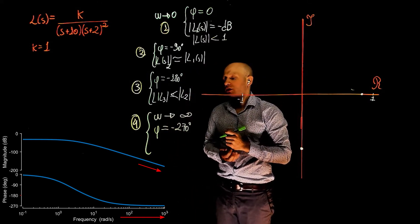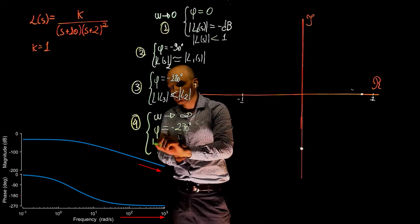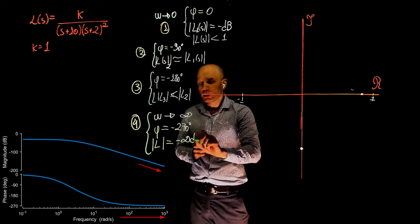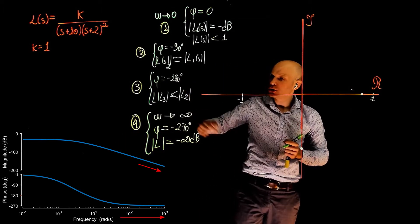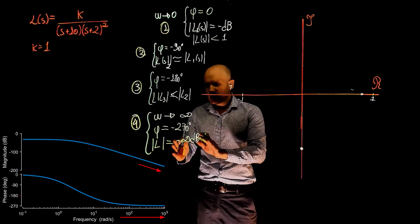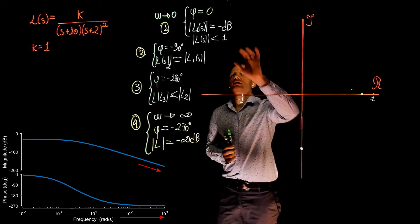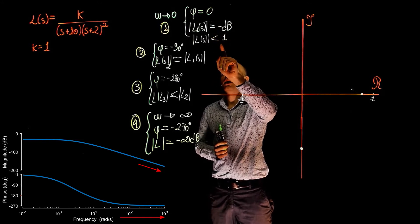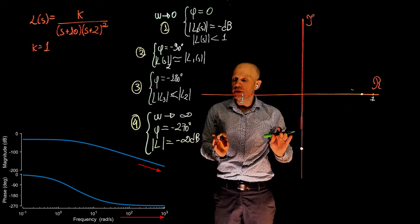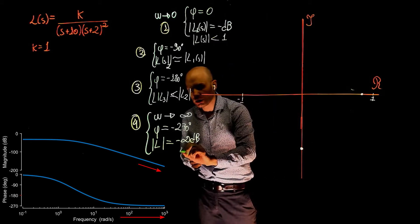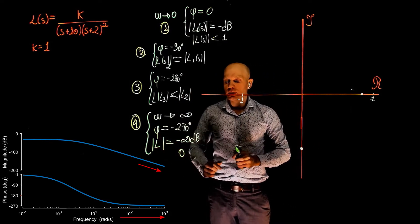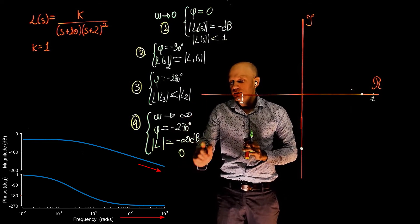The phase tends to negative 270 degrees but doesn't exactly cross it. What happens to the magnitude? The magnitude tends to negative infinity dB. As the frequency increases, the magnitude goes down and tends to negative infinity dB. In a non-decibel scale, this means the magnitude is tending to a very small number. Just as we deduced that a negative dB number places us inside of negative 1, now we still have a negative dB but much, much smaller. Taking 20 log of a very small number is the only way we tend to negative infinity, so the magnitude in non-dB scale is 0.